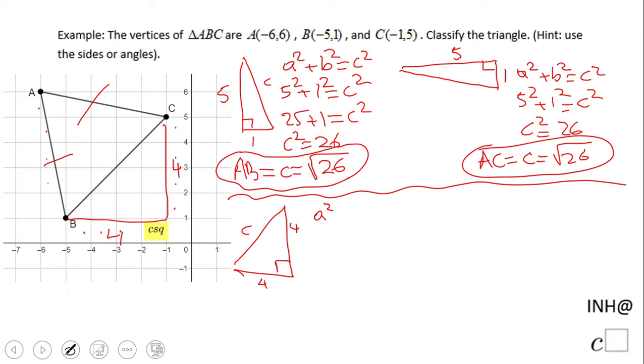We get 4² + 4² = C². 16 + 16 = C², so C² = 32. C would be √32, which can be simplified. 4 times 8 is 32, and √4 is 2.